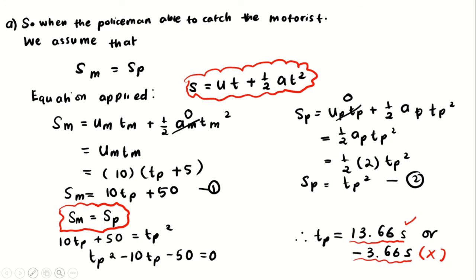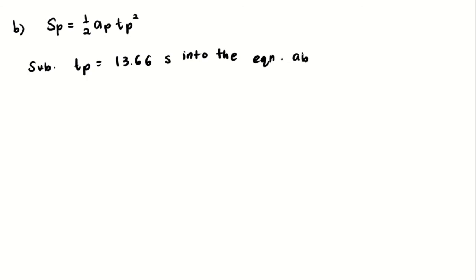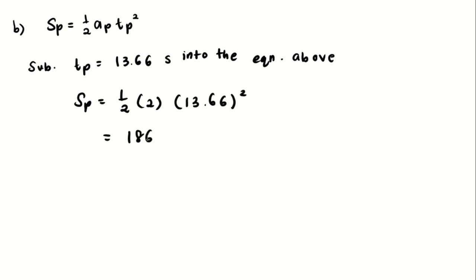For question b, we find the distance traveled by the policeman. Substituting t_p = 13.66 seconds into equation two, s_p = t_p², we get a final displacement of 186.6 meters.